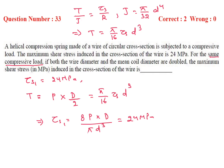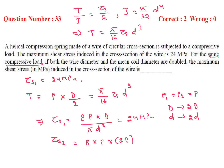In the second case, P is the same (P1 = P2 = P), coil diameter is doubled (2D), and wire diameter is also doubled (2D). Putting values in the formula: tau S2 equals 8 times P times 2D divided by pi times (2D) cubed. Solving, we get 1 by 4 times (8PD / pi D cubed), which is 1/4 tau S1.